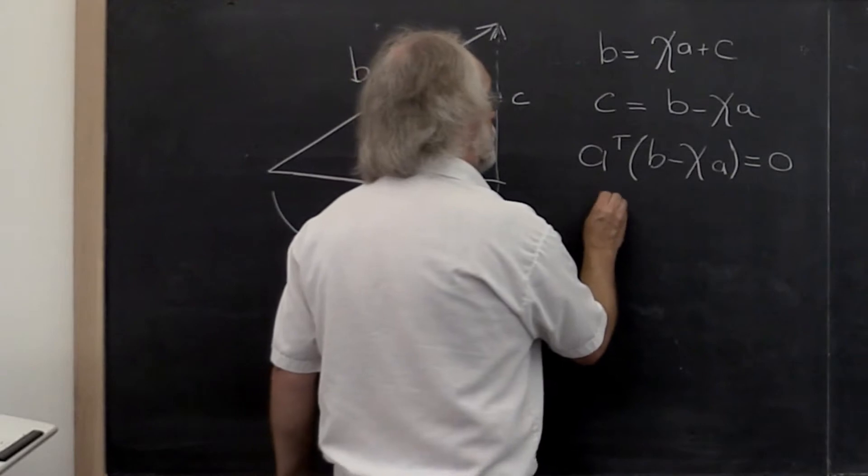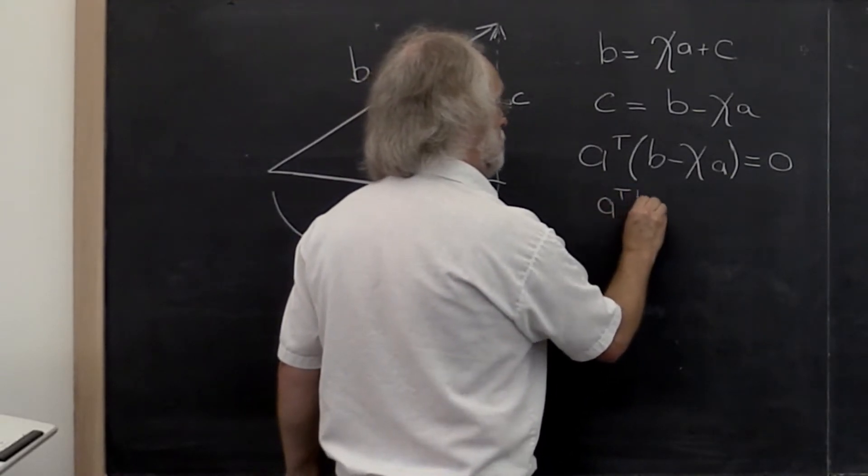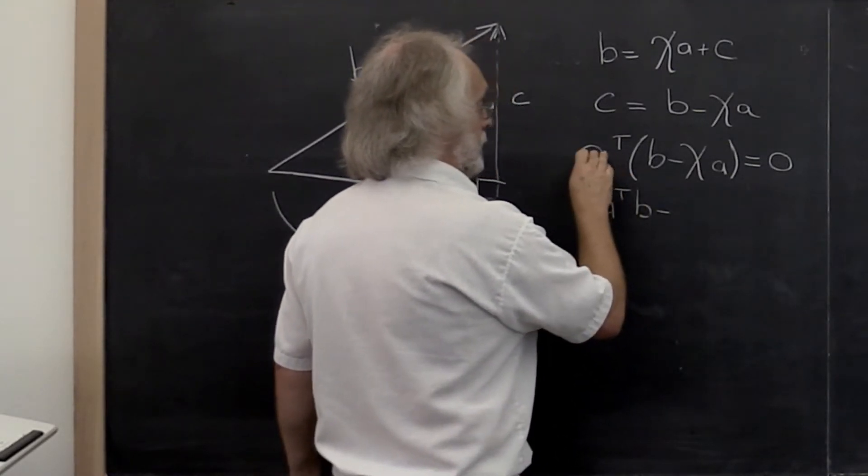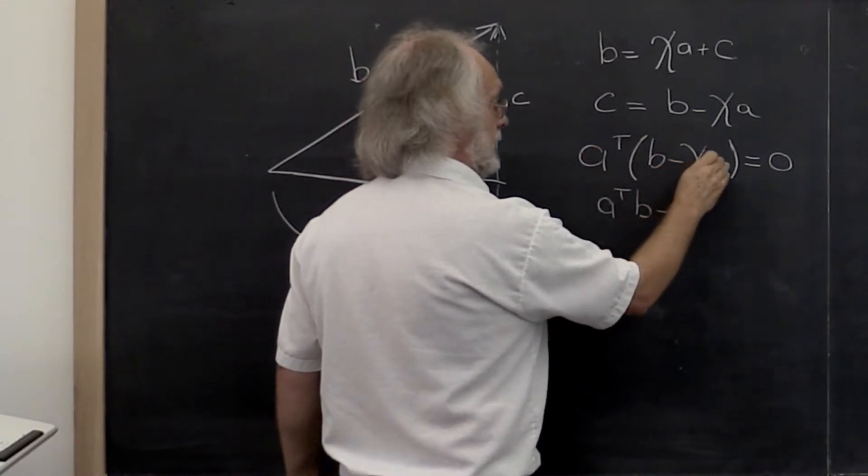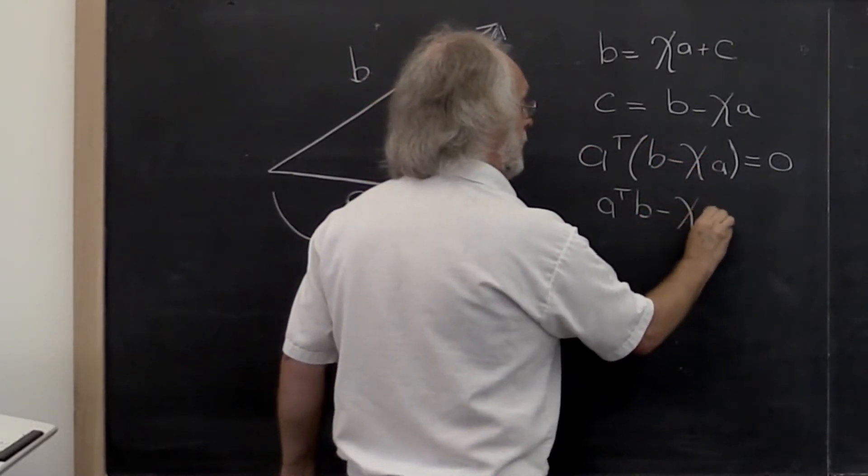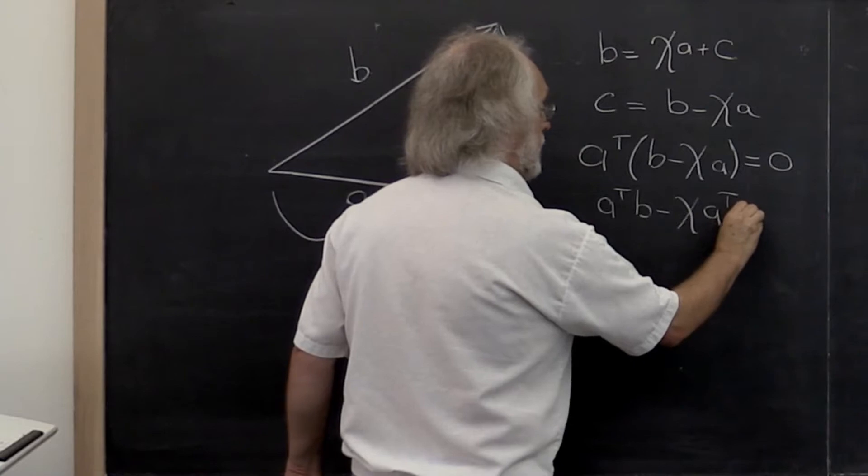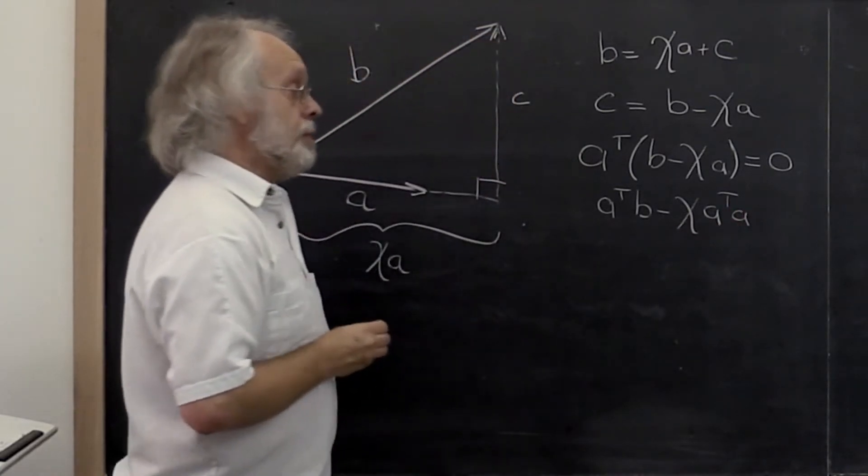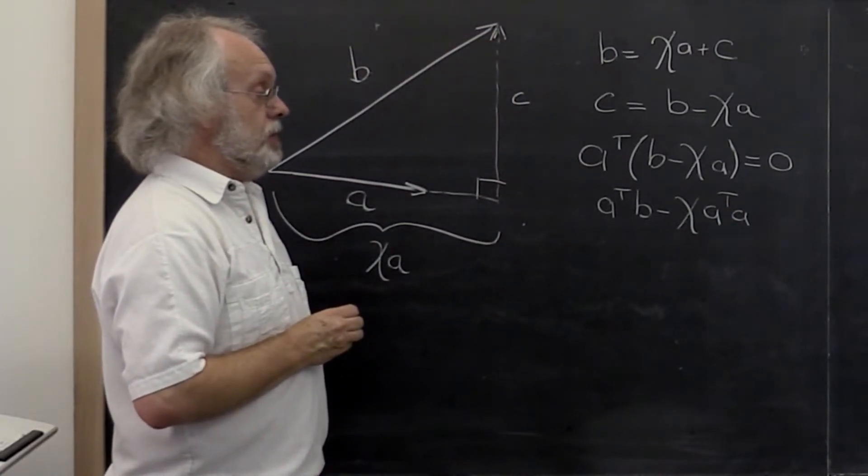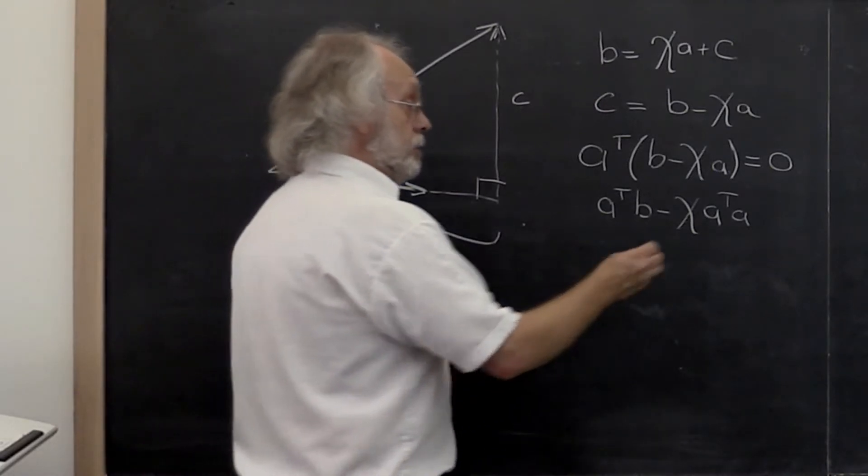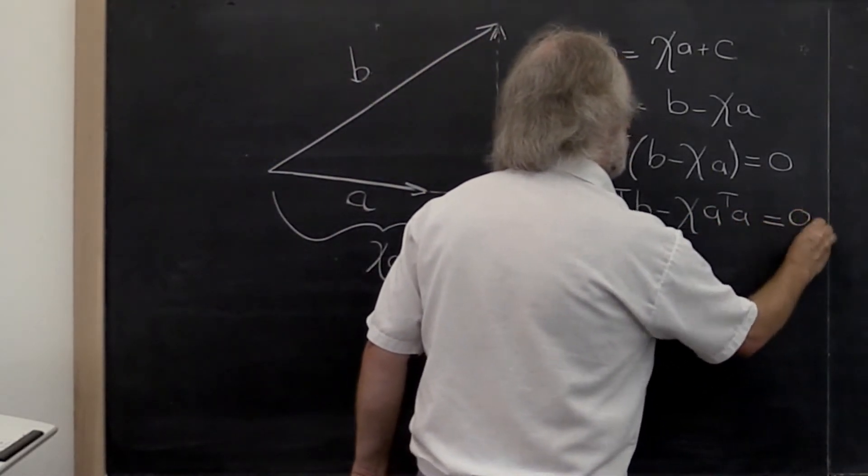Multiplying that out, we get that A transpose times B minus chi times A transpose times A, the dot product of A with itself, and that must be equal to zero.